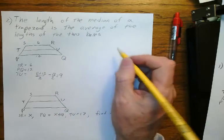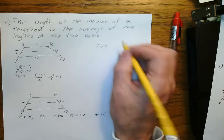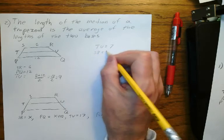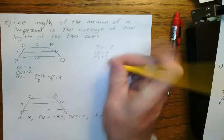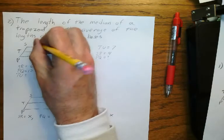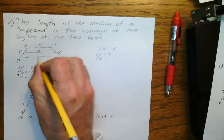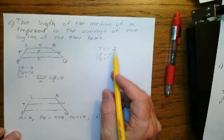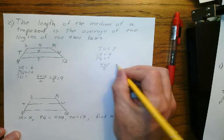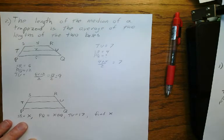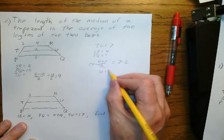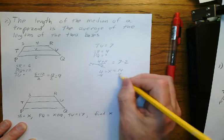What if we're given a problem like this? TU is 7 and SR is 4, and we want to find PQ. TU, the median, is the average of these two. So if I put X for PQ, it will be: 4 plus X divided by 2 equals 7. The first thing you do is multiply each side by 2. The 2's cancel and you get 4 plus X equals 14, and then X equals 10.